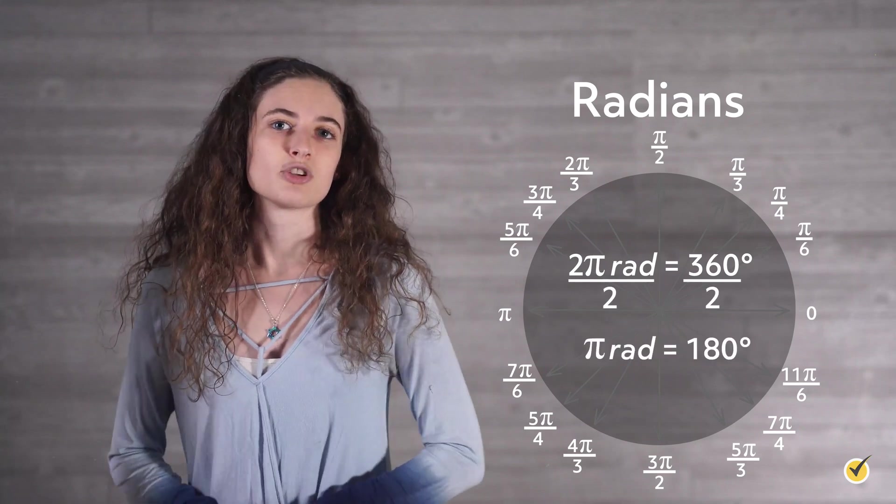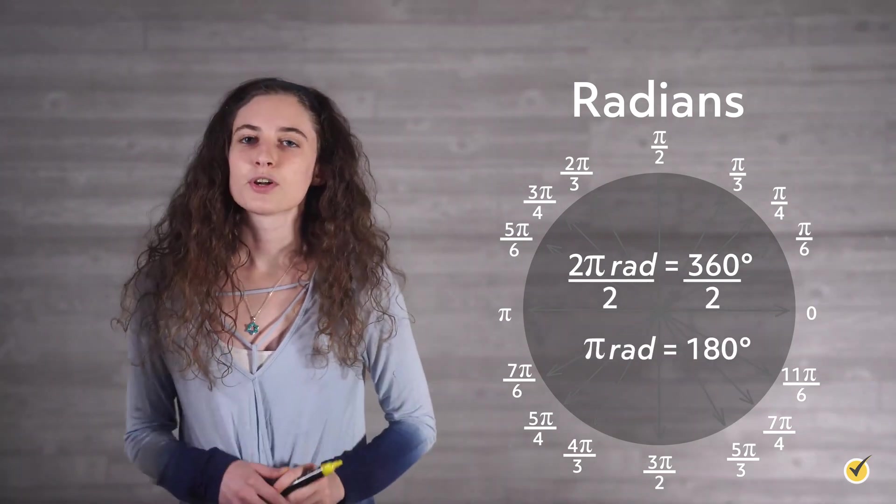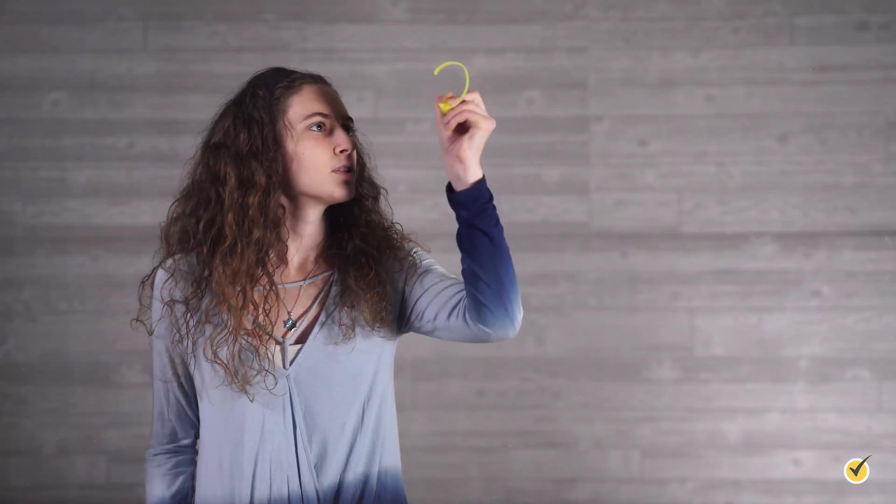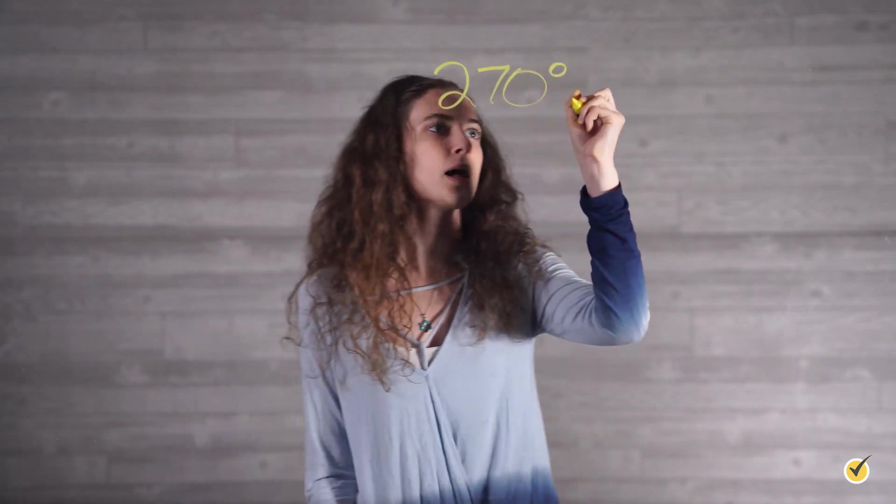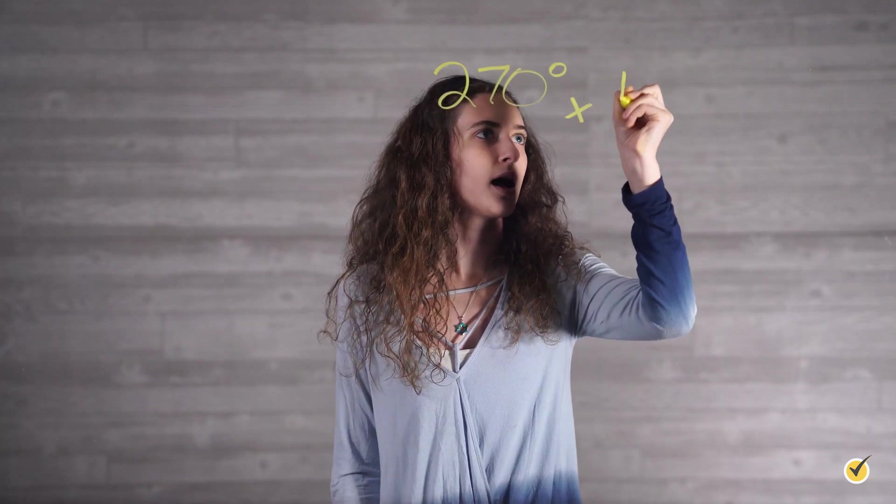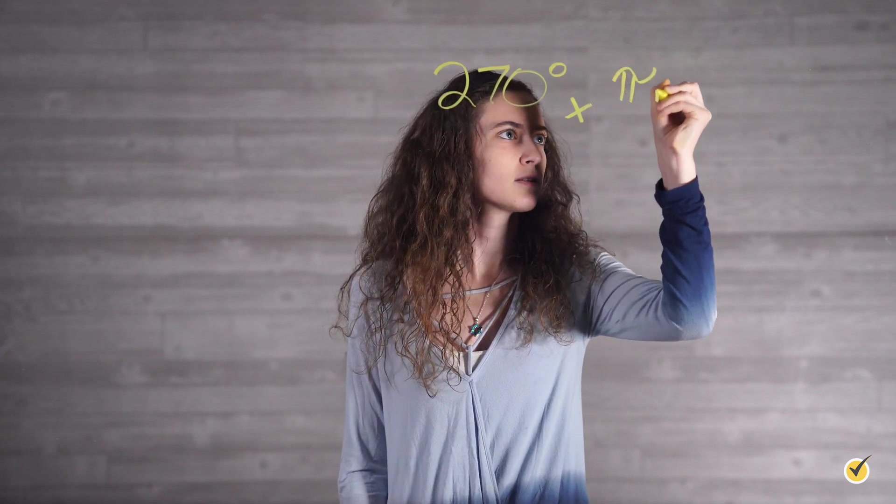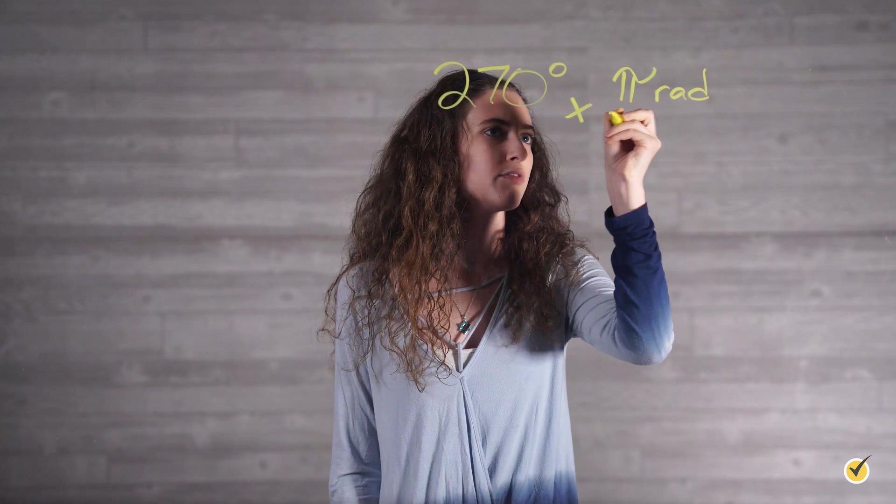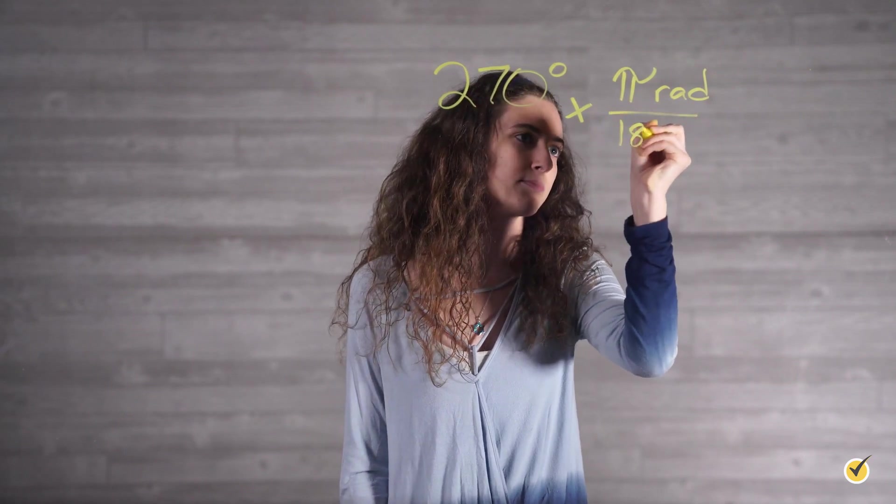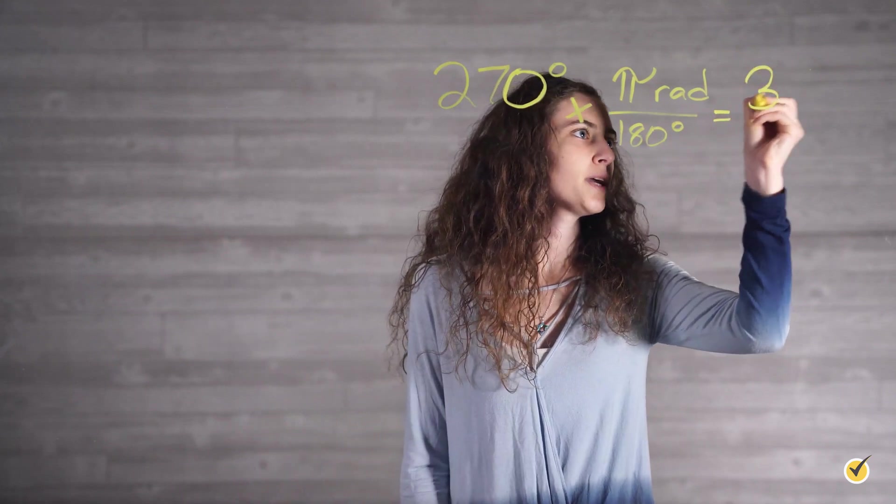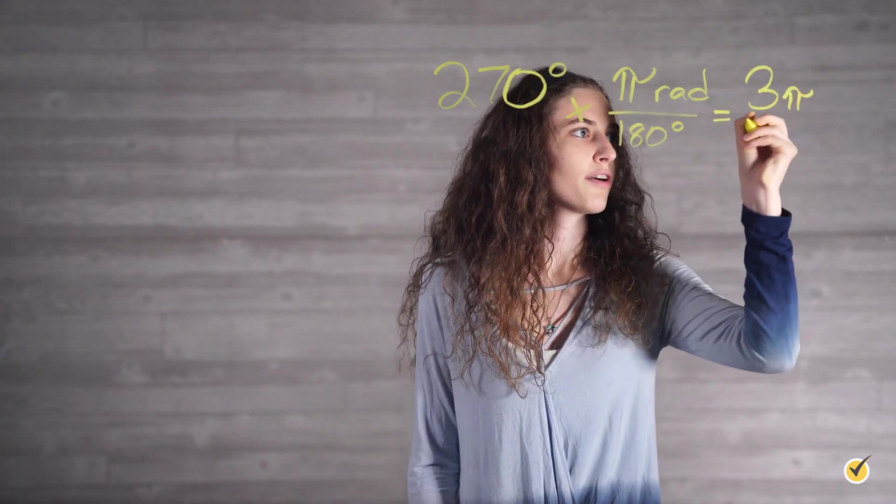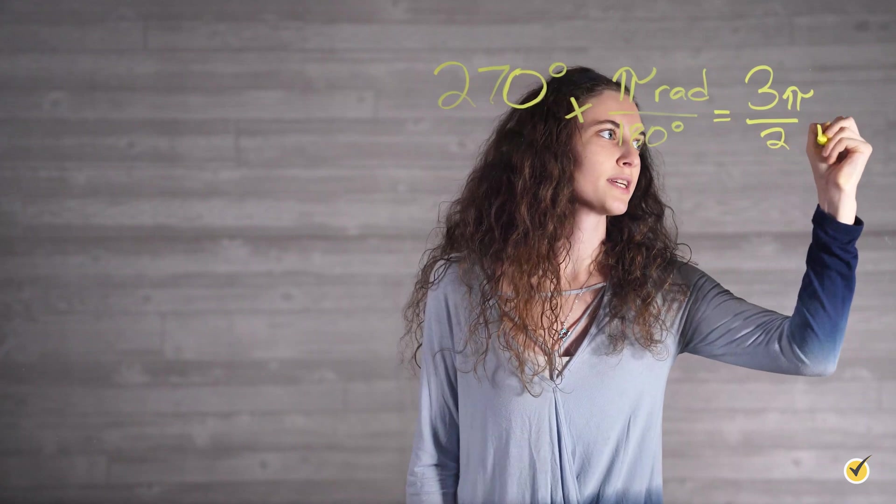Let's say we want to convert 270 degrees to radians. What we're going to do is take our 270 degrees and multiply by our conversion factor, which is pi radians over 180 degrees. This then simplifies to 3 pi over 2 radians.